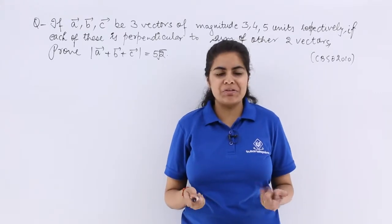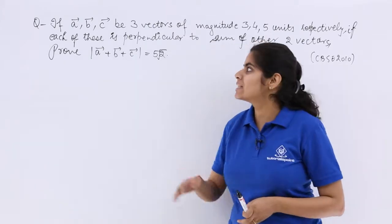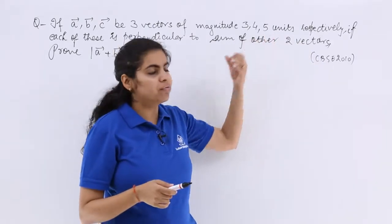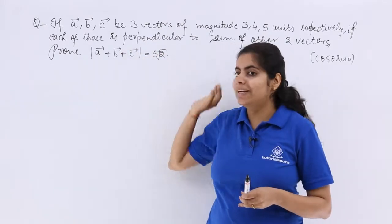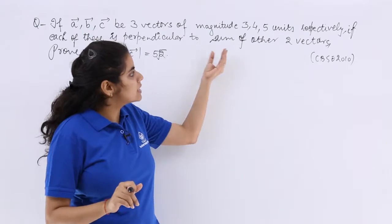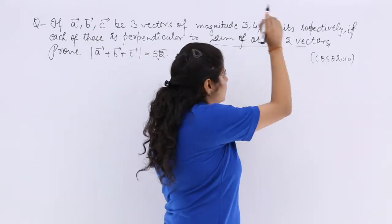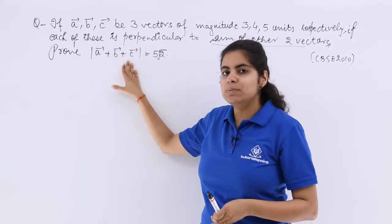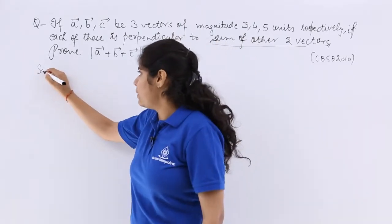Now, a very interesting question in front of you. CBSE 2010 previous year question. It says if A, B, C be 3 vectors of magnitude 3, 4, 5 units respectively, if each of these is perpendicular to the sum of other 2 vectors. This central line is very important. Then prove that mod of A plus B plus C is equal to 5 root 2. Let's see it step by step. This question seems a bit different from what we started till now.